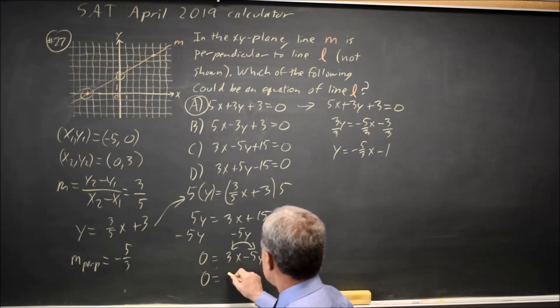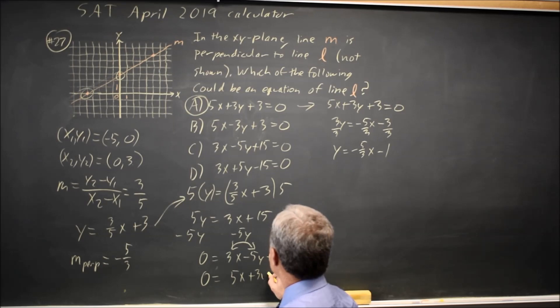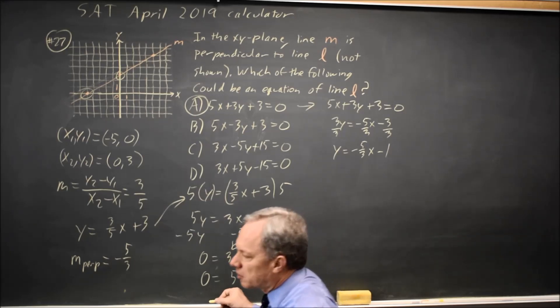That would be 0 equals positive 5x plus 3y plus 15. So I took the negative 5 from the y and put it with the x. Took the positive 3 from the x and put it with the y. And I flipped the sign on one of them.